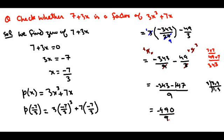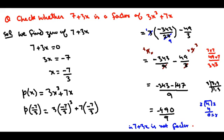The remainder is not zero. If remainder is zero then we say the divisor is a factor — for example, 4 divided by 2 gives remainder 0, so 2 is a factor of 4. But here remainder is not zero, therefore 7 plus 3x is not a factor of 3x cube plus 7x. Thanks for watching.